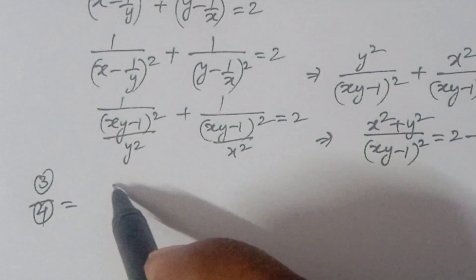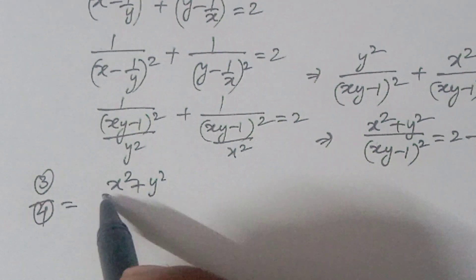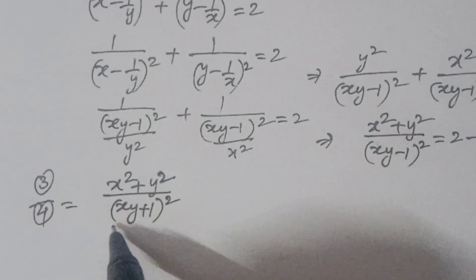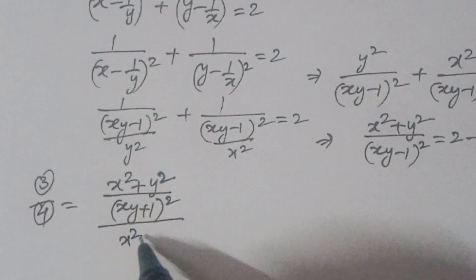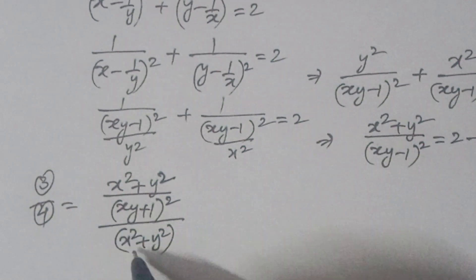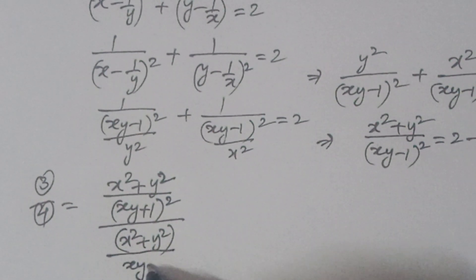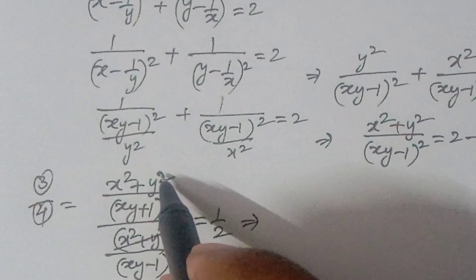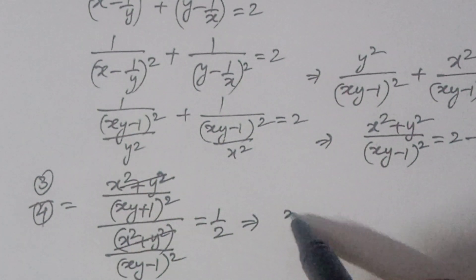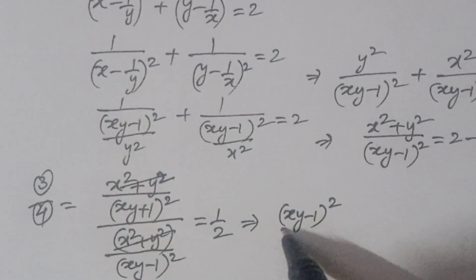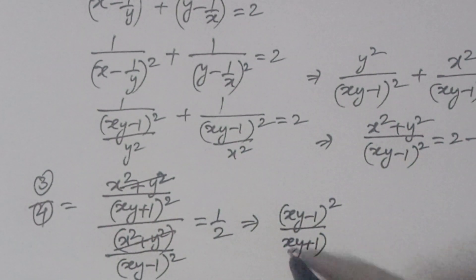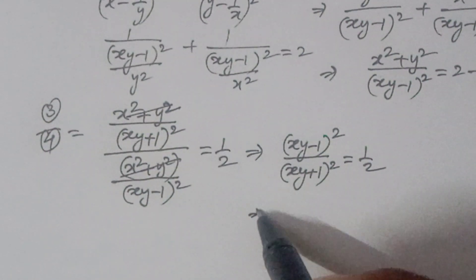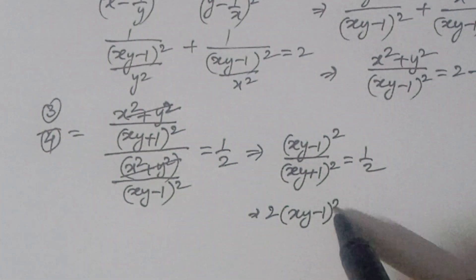Now dividing equation 3 by equation 4: [(x^2 + y^2)/(xy + 1)^2] divided by [(x^2 + y^2)/(xy - 1)^2] = 1/2. The x^2 + y^2 cancels, giving (xy - 1)^2 / (xy + 1)^2 = 1/2.